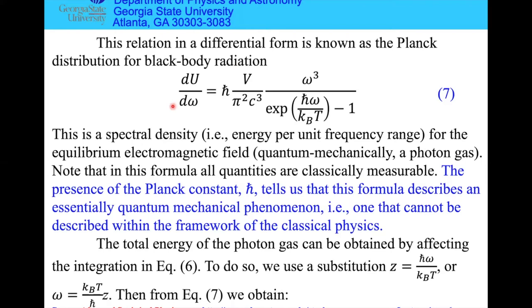This expression dU/dω is called spectral density: energy per unit frequency range for the equilibrium electromagnetic field, or photon gas. In this formula, all quantities are classically measurable. Volume is classically measurable, frequency is classically measurable through wavelengths in interferometers. The fact that this formula contains ℏ, which doesn't eliminate, tells you it cannot be obtained without quantum mechanics.